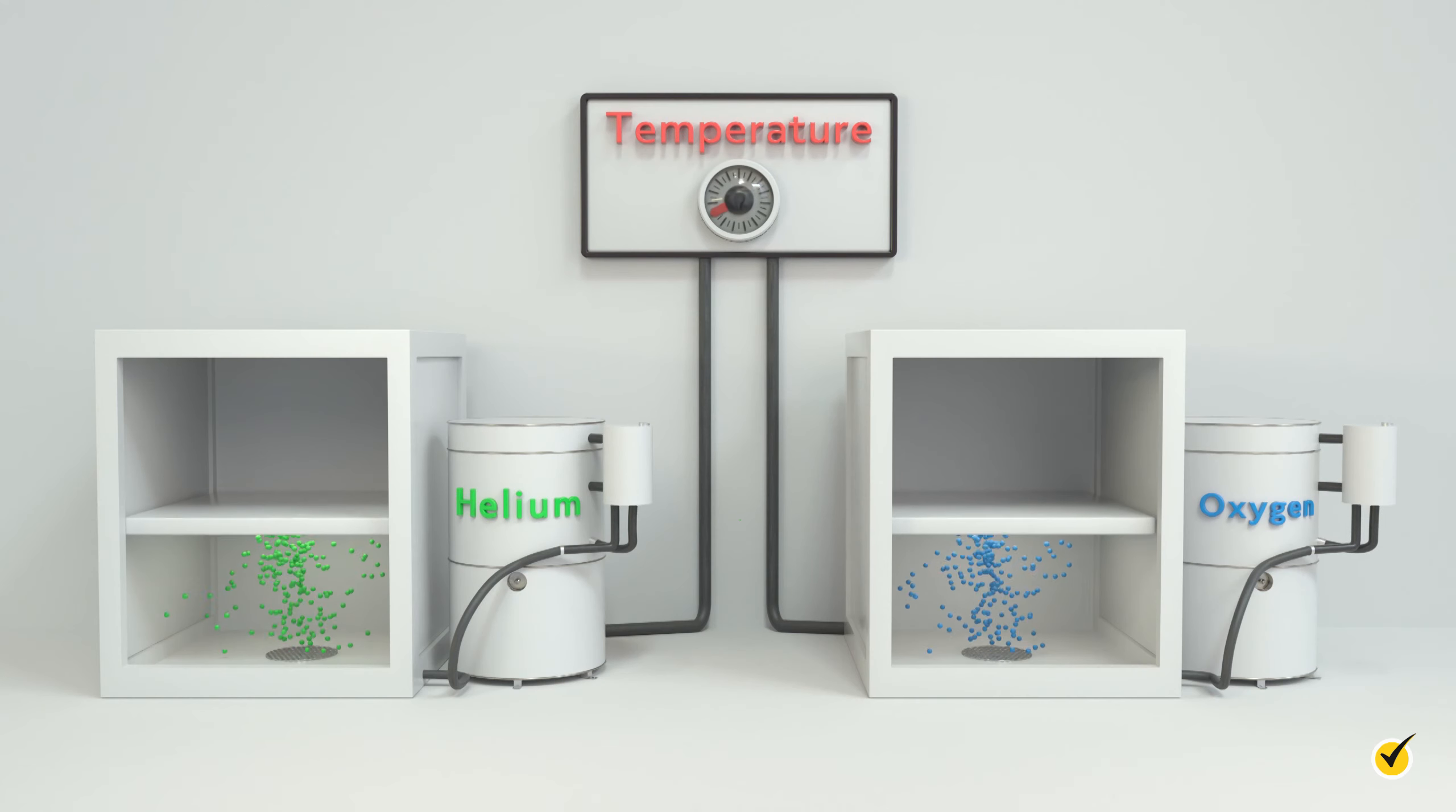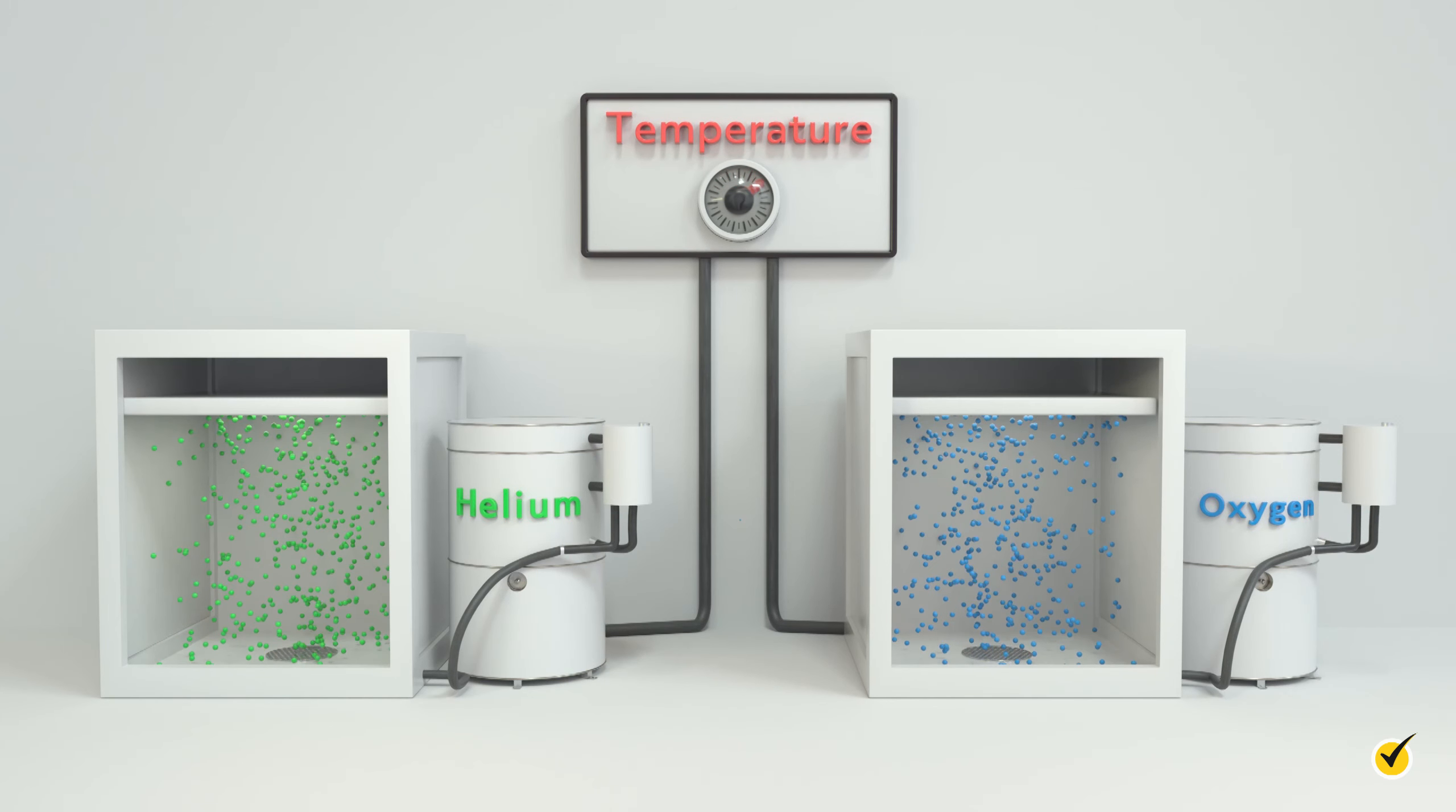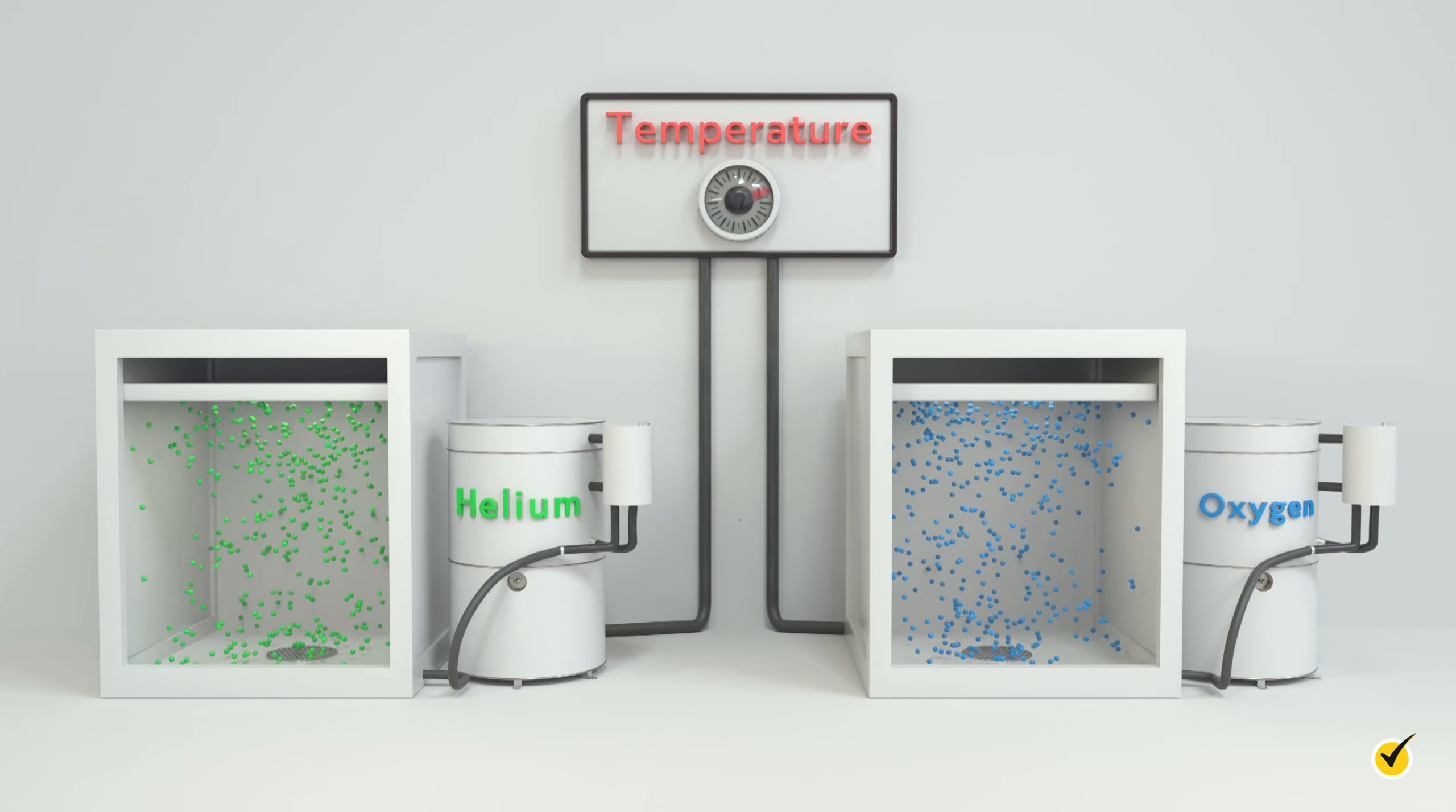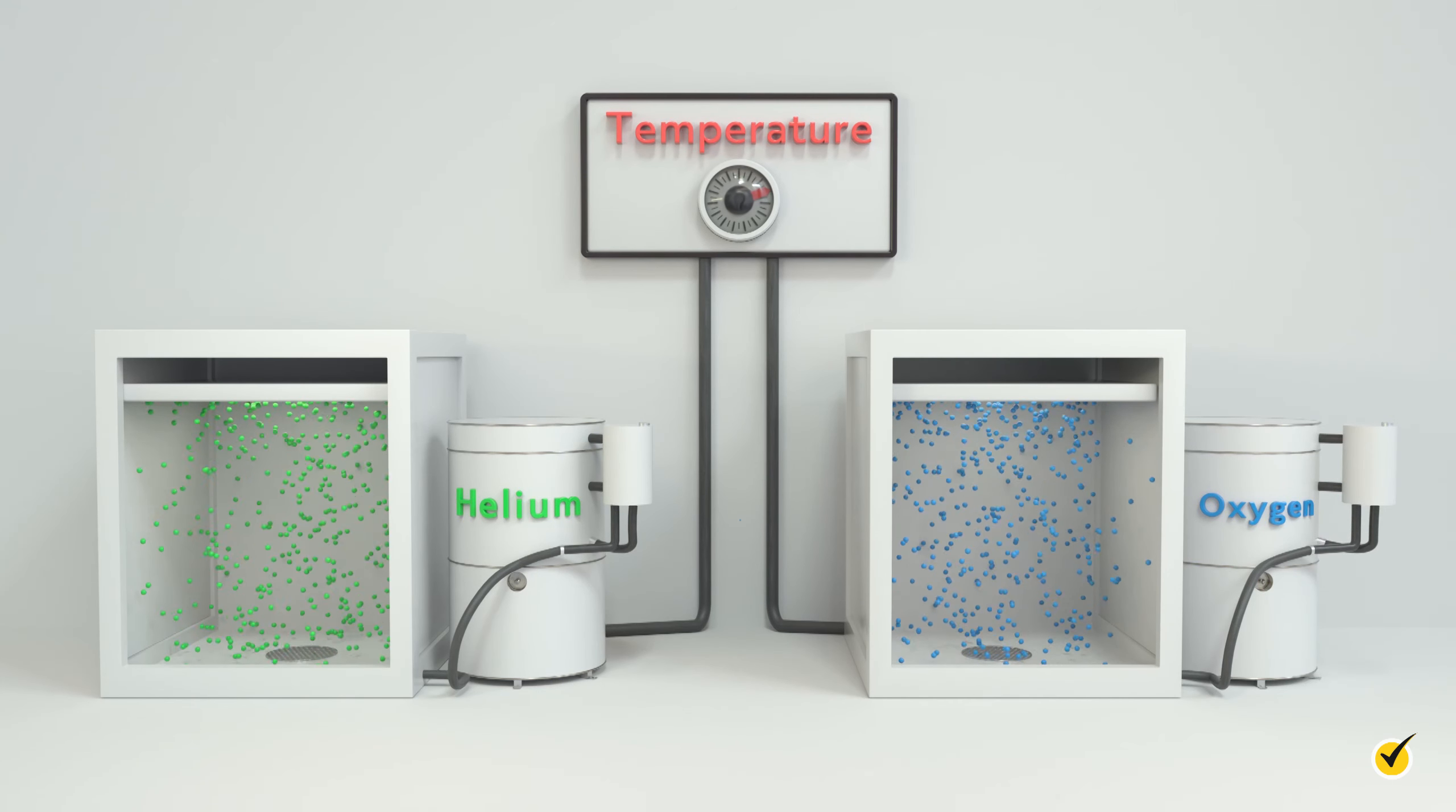In doing so, they discovered direct relationships between these variables. For example, the volume of a gas increases with increasing temperature, and the pressure decreases as volume increases. Importantly, they noticed that at standard pressure and temperature, these relationships held up regardless of the type of gas.